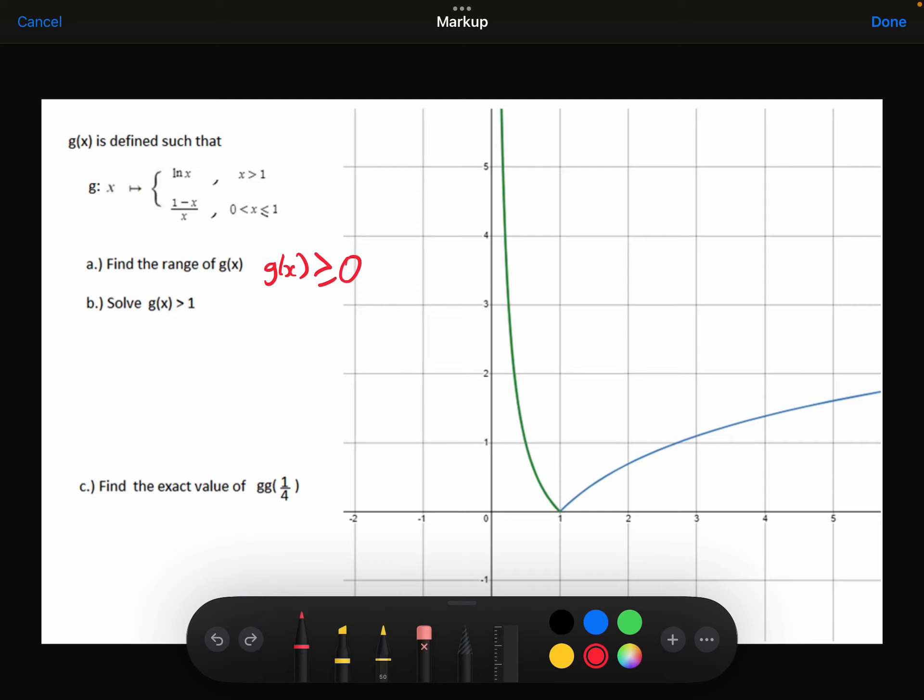Part B, solve G of x is greater than 1. I can see that it's equal to 1 here and here. We'll find those points in a minute, and then I can say that if x is less than that value or greater than this value, then that's where G of x will be greater than 1.